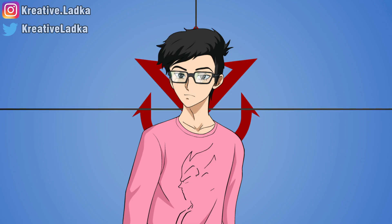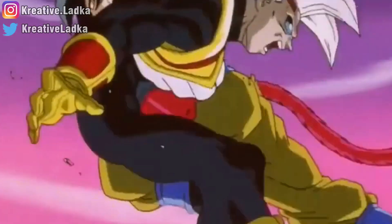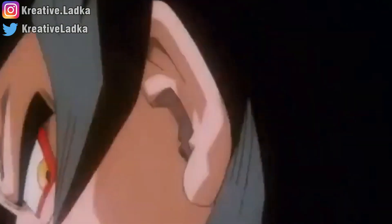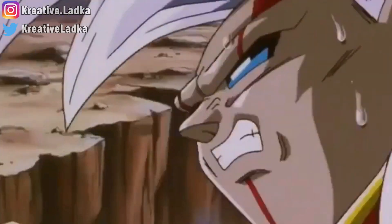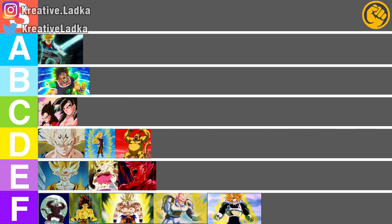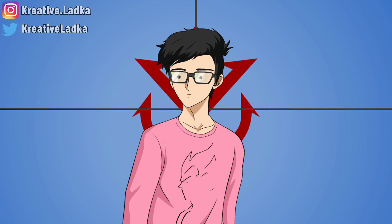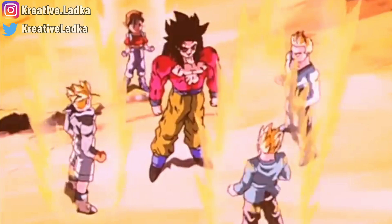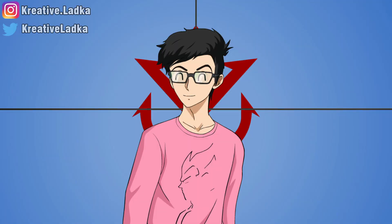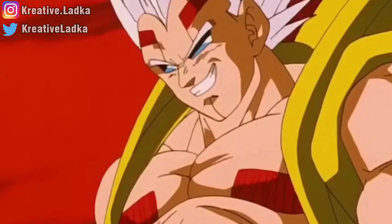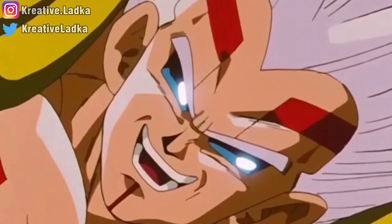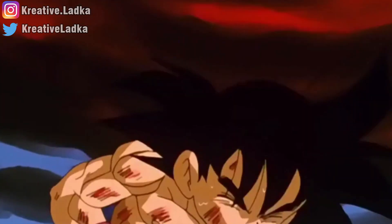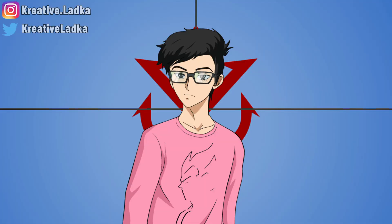Super Saiyan 4 — speed increases but power stays at Golden Oozaru level, meaning Golden Oozaru's power in human form with more speed. It goes to C tier. Don't rush to the comments — I know SS4 is your favorite, but wait. Then there is Full Power Super Saiyan 4, which is much more powerful than normal Super Saiyan 4. It goes to B tier alongside Ikari. Then there is Baby — Baby Vegeta, when Baby took control of Vegeta's body, his power increased, but it's not as powerful as Full Power Super Saiyan 4.